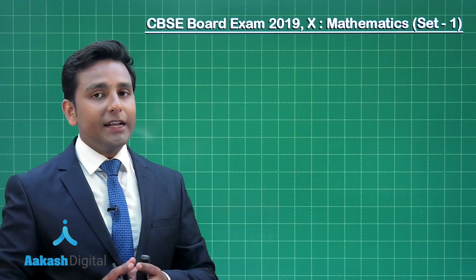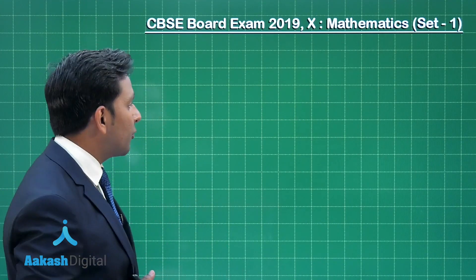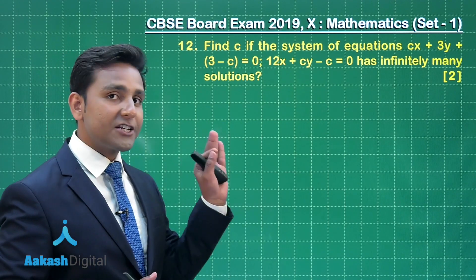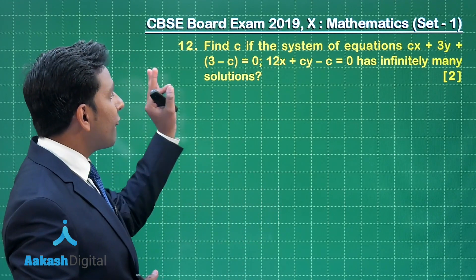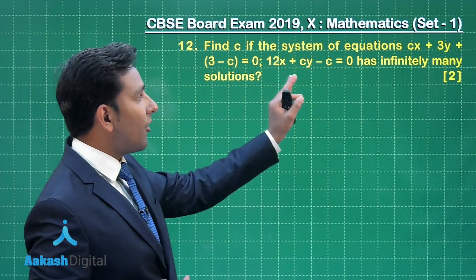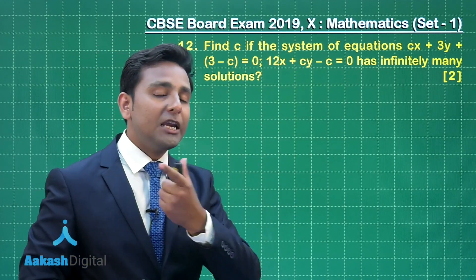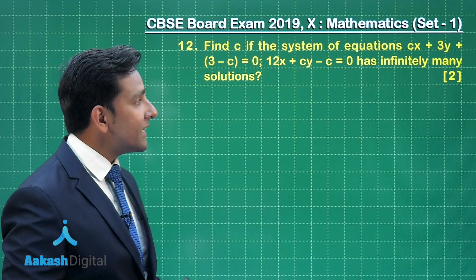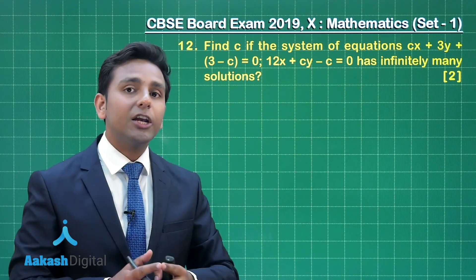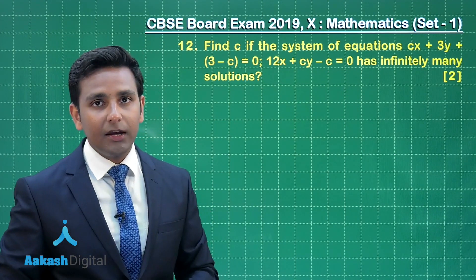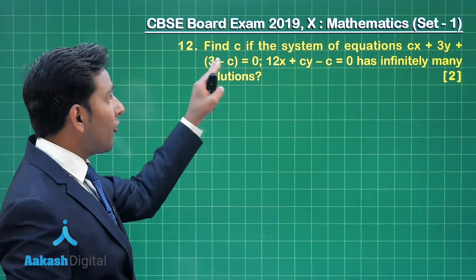Now let us proceed to the next question, that is question number 12. This is the last question of section B and this question says find C if the system of equations given has infinitely many solutions. This question is from chapter pair of linear equations in 2 variables.